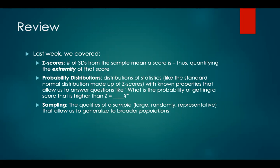We also talked about probability distributions, which are distributions of statistics with known properties that allow us to answer questions like, what is the probability of getting a z-score that is higher than z equals blank? An example of this is the standard normal distribution, which is made up of z-scores. We also talked a bit about sampling — the qualities of a sample, whether they be large, small, randomly selected, or representative, that allow us to generalize to broader populations.